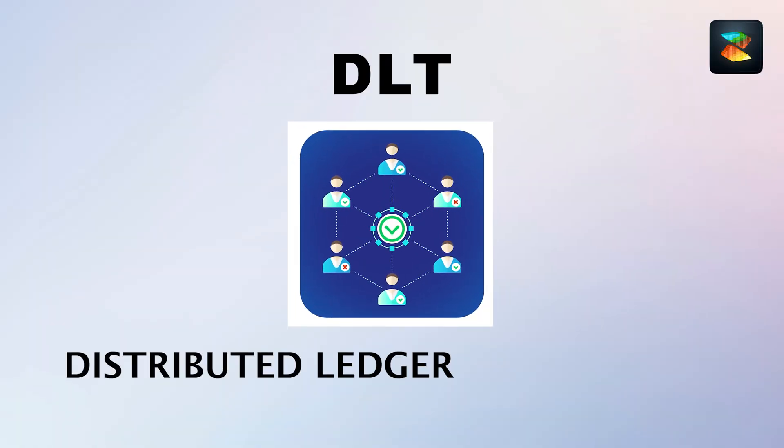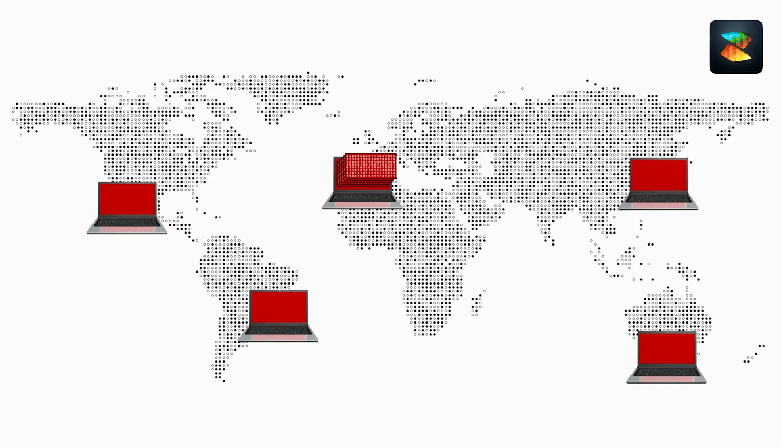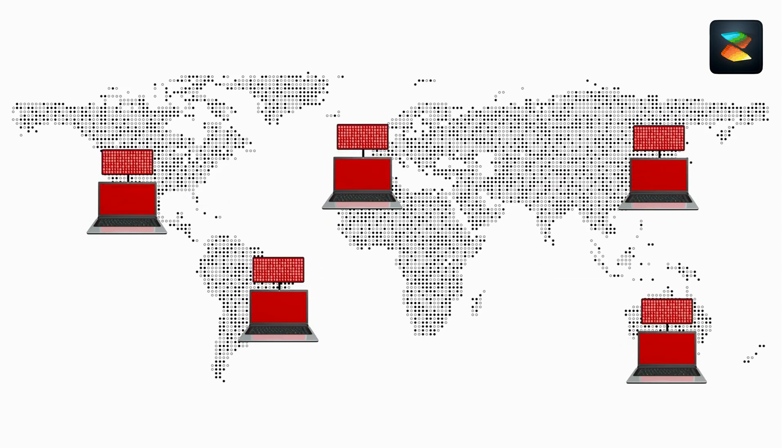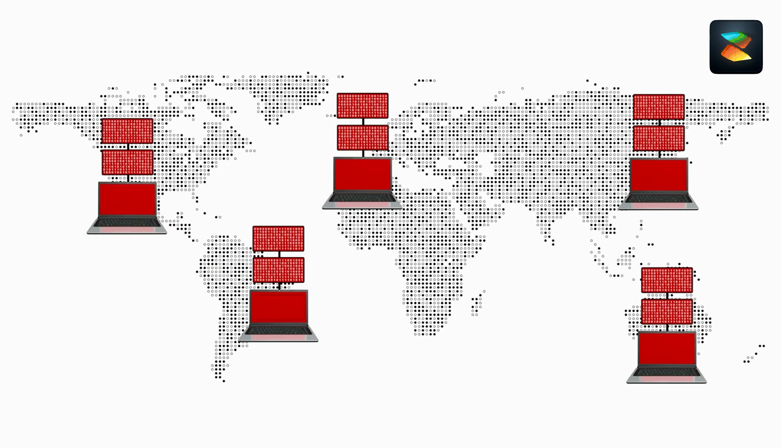which stands for Distributed Ledger Technology. A distributed ledger is a set of transactions that are duplicated and distributed throughout the network on each computer system that participates in that network. Basically, each computer on the whole network is going to include a copy of the blockchain — meaning every single transaction that has happened from the start of that blockchain. Every computer has that information.